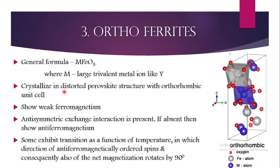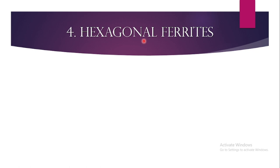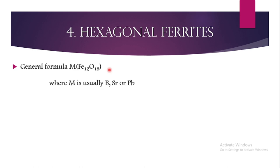If you have understood ferromagnetism and antiferromagnetism, ferrimagnetism is easy to understand. It means there exists a transition temperature below which the material acts as ferrimagnetic and above which it is non-ferrimagnetic due to changes in their moments. Moving on to the last type, hexagonal ferrites: based on the name, a hexagonal crystal structure is involved. The general formula is MFe₁₂O₁₉, where M is usually barium, strontium, or lead.